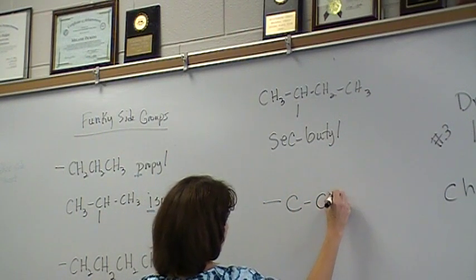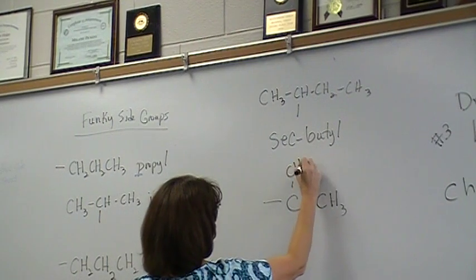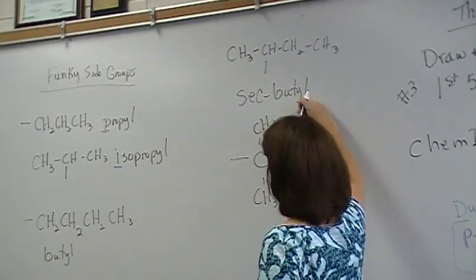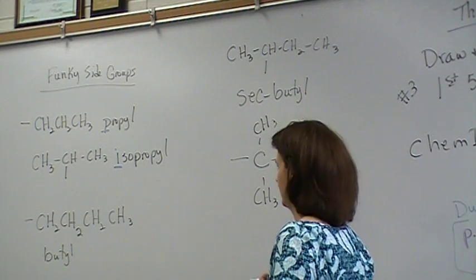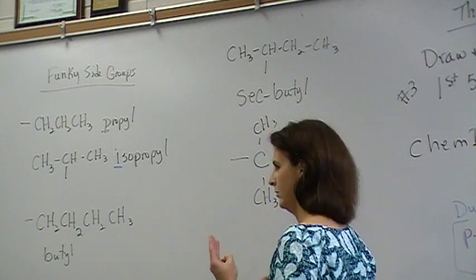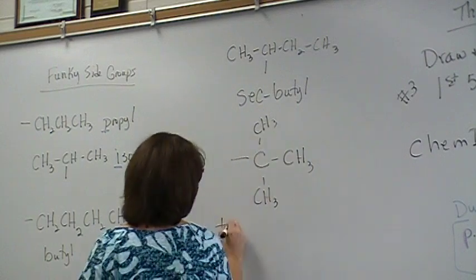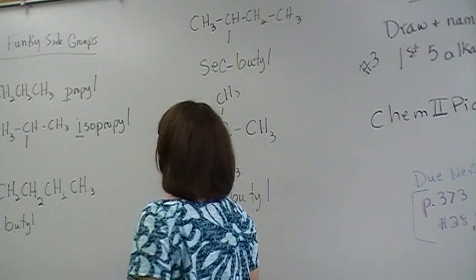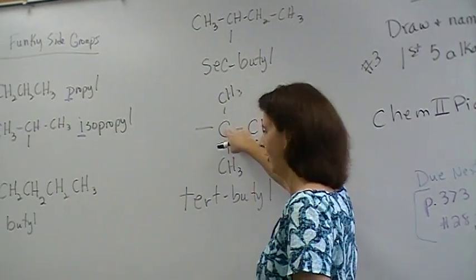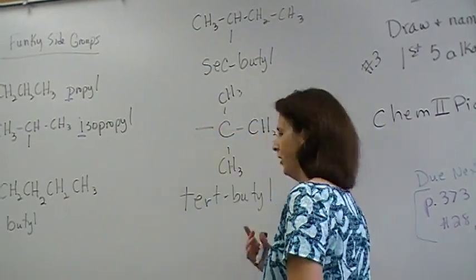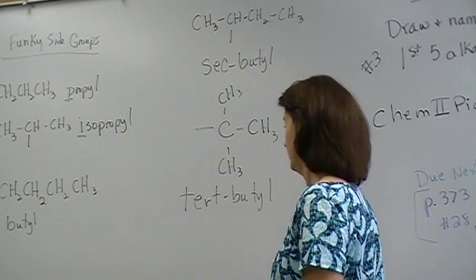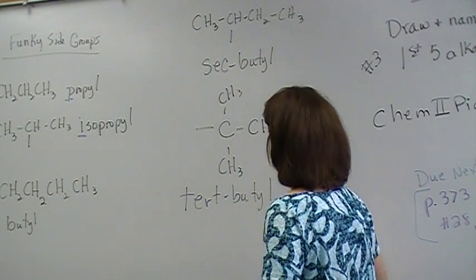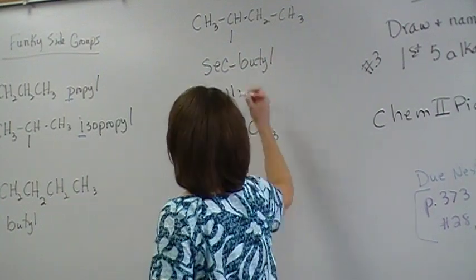Then, there's this one. If this is a sec-butyl, what do you think that one is? Tert-butyl. Close. Tert-butyl. Because this is a tertiary carbon, the one with the line on it. Call it tert-butyl if you want. The tert is in italics. When you're alphabetizing sec or tert, you use the B.